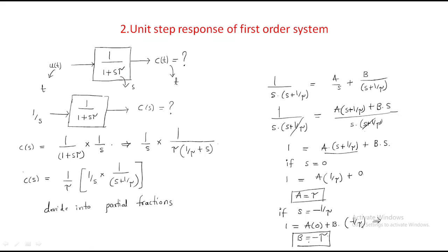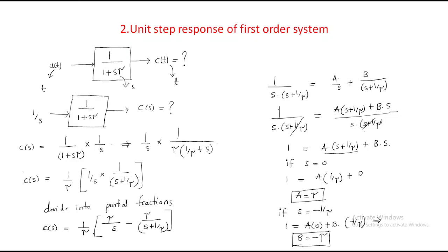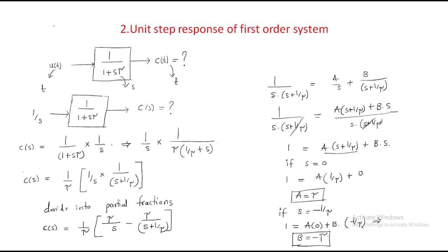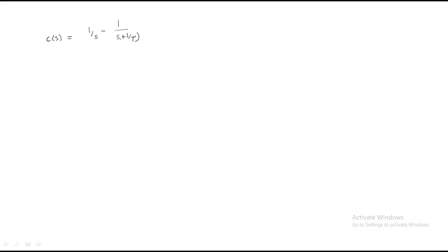Substituting A = τ and B = −τ back, we get C(s) = (1/τ)·[τ/s − τ/(s + 1/τ)]. Both τ values cancel, so finally C(s) = 1/s − 1/(s + 1/τ).